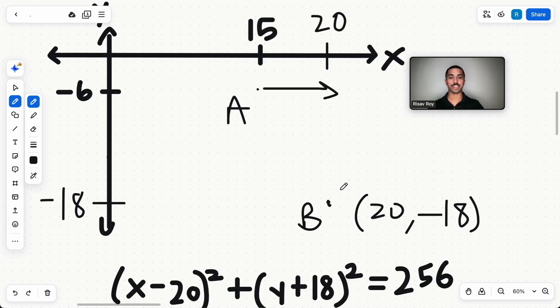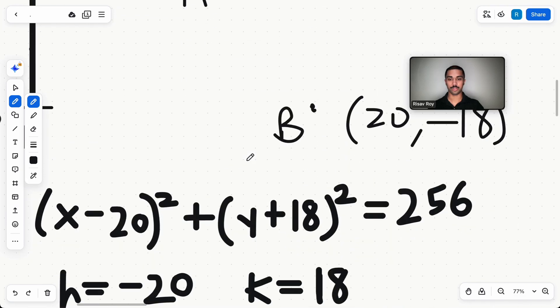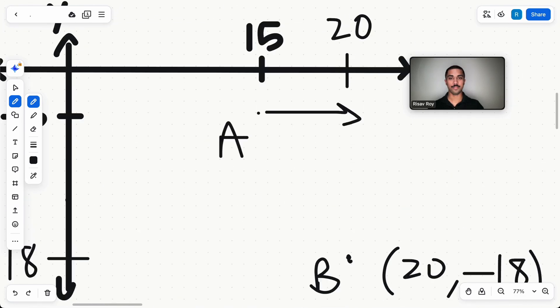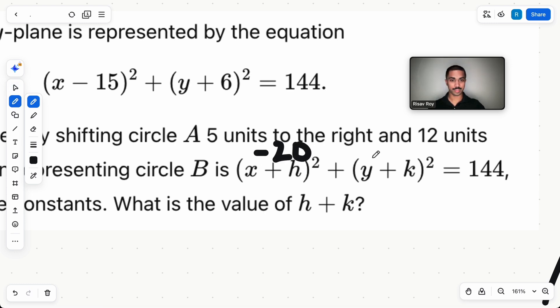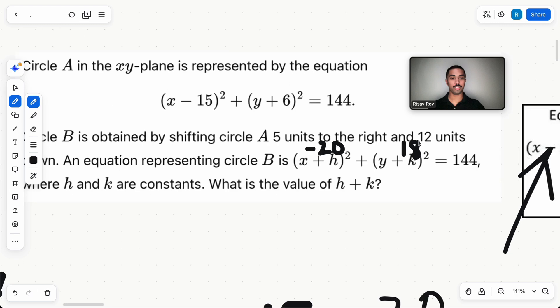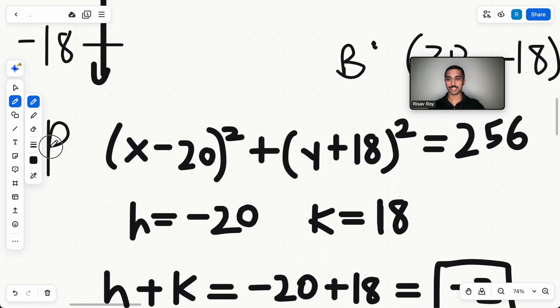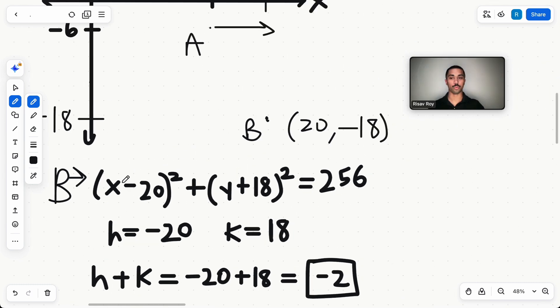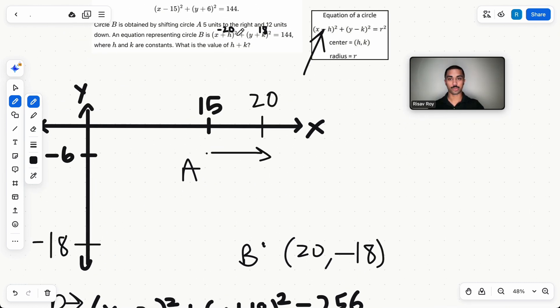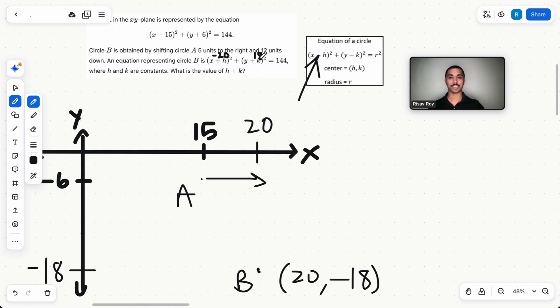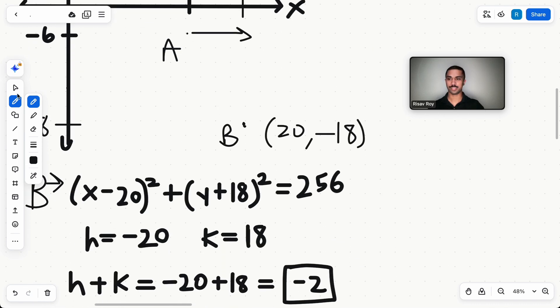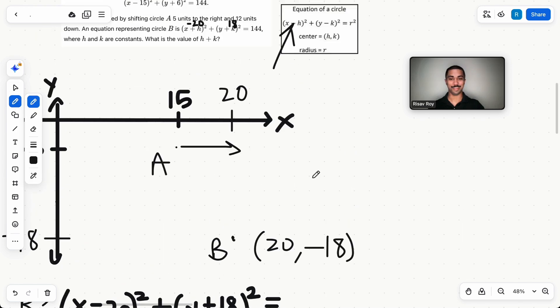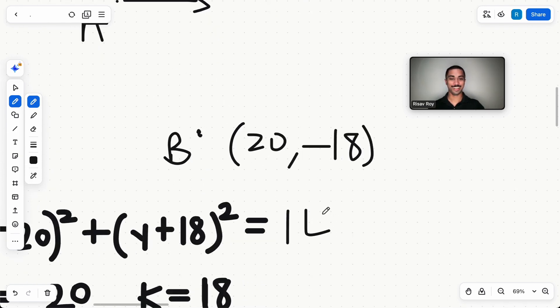How do we know to switch the signs? Well, let's plug in h and k. If we plug in h, what did we get here? -20 and 18. We put -20 here. Let me delete this line first so we have a little more space to work. -20 and 18. If we put these values in for h and k, what we get is the equation for circle B. Exactly. (x - 20)² plus (y + 18)² equals... where did we get this? My bad. 144.